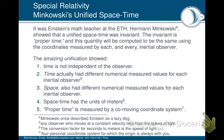Time actually has a different numerical measured value for each inertial observer. Space also has a different numerical measured value for each inertial observer. Space-time has the units of meters, including time. The proper time, the only invariant within space-time, is measured by a co-moving coordinate system.